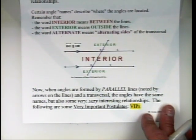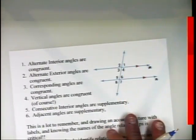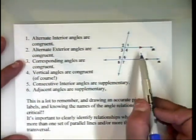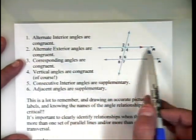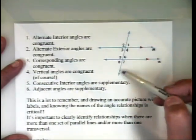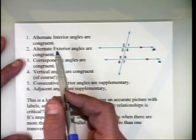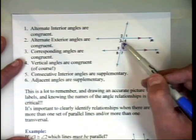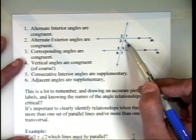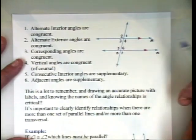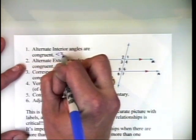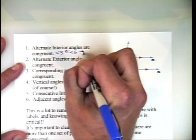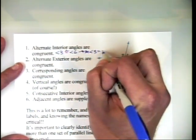Now we're going to look at some very important postulates — some VIPs. When parallel lines are cut by a transversal, the first postulate is that alternate interior angles are congruent. With lines M and N and a transversal creating eight angles, angle 3 and angle 6 are congruent, and angle 4 and angle 5 are congruent — meaning they have the exact same measure.